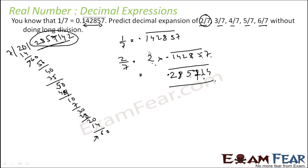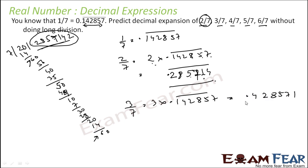This is one advantage of writing in this form with a bar. Similarly, 3 by 7 is 3 into 0.142857 repeating. Solving: 7 × 3 is 21, carry 2; 5 × 3 is 15, plus 2 is 17, carry 1; 8 × 3 is 24, plus 1 is 25, carry 2; 2 × 3 is 6, plus 2 is 8; 4 × 3 is 12, carry 1; 1 × 3 is 3, plus 1 is 4. So 3 by 7 equals 0.428571 repeating.